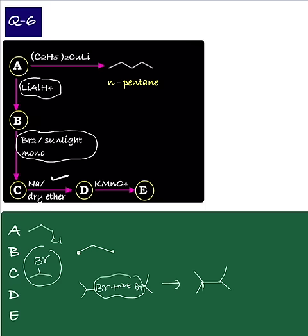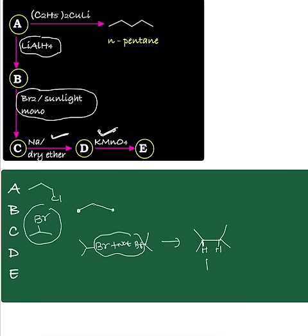And in this, here you have one tertiary hydrogen, here you have one tertiary hydrogen. On reaction with potassium permanganate, this will be converted to alcohol—dihydric alcohol.